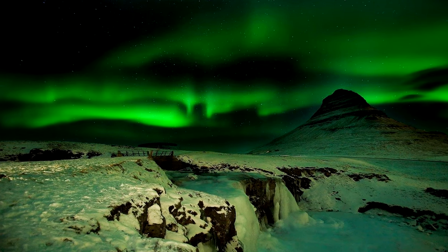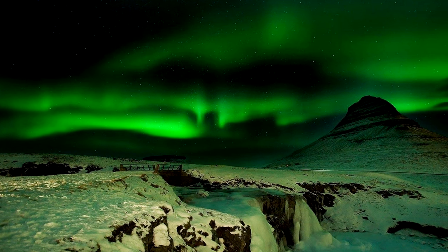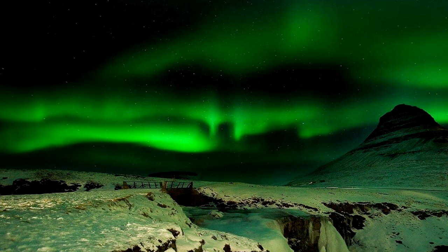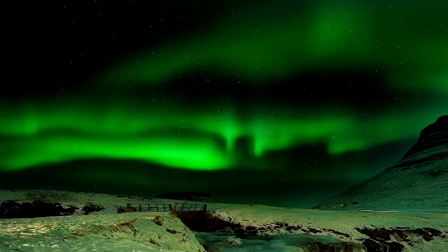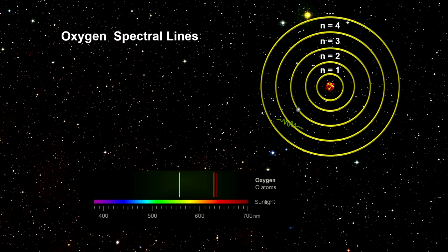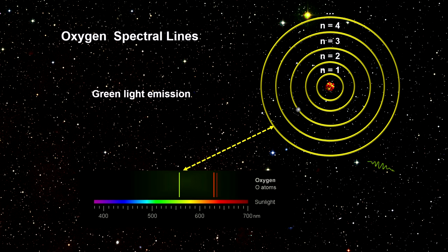Remember the red and green light of the aurora borealis and the structure of molecules we discussed in our segment on the heliosphere? The aurora is a good example of light being emitted as electrons change energy levels.